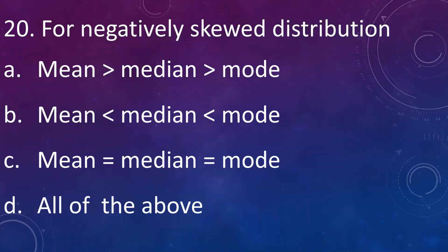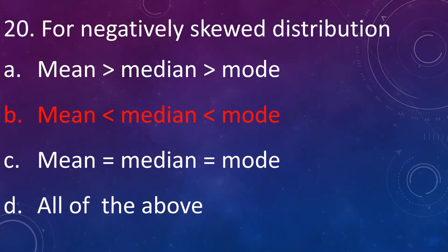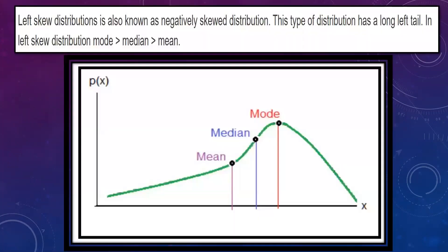For a negatively skewed distribution: A: mean is greater than median greater than mode, B: mean is less than median less than mode, C: mean is equal to median equal to mode, D: all of the above. Answer is B. For a negatively skewed distribution, mean is less than median less than mode. This is shown in the graph here — mode is greater than both median and mean.